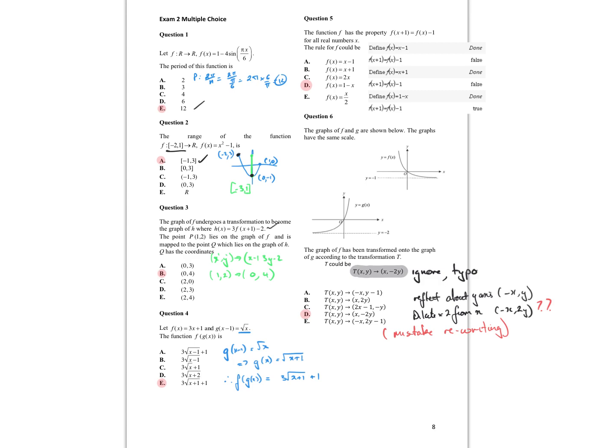Let's identify the transformations that have taken place. The 3 affects the y. x plus 1 is a translation of 1 unit left; minus 2 we subtract. And then if I substitute the point 1, 2 in, I'll get the point 0, 4.